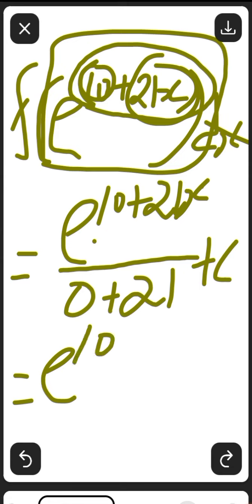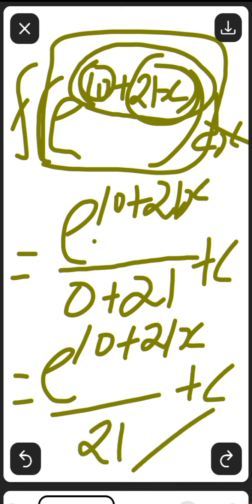Now, this is e^(10 + 21x) over 21 plus C. So, this is how to solve this question.